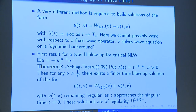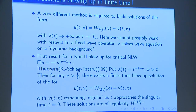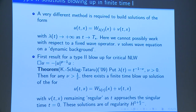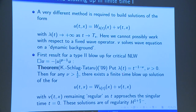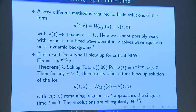Nevertheless, we have the following result, which goes back to 2007, in joint work with Schlag and Tataru. There exist type 2 blow-up solutions where λ(t) is of the form t^{-1-ν} — a very explicit scaling law — provided ν is bigger than one half.